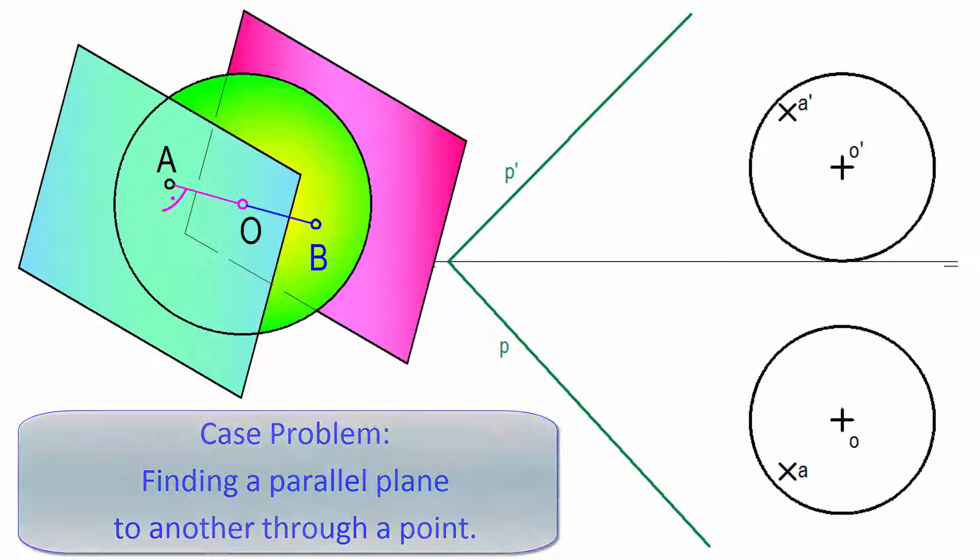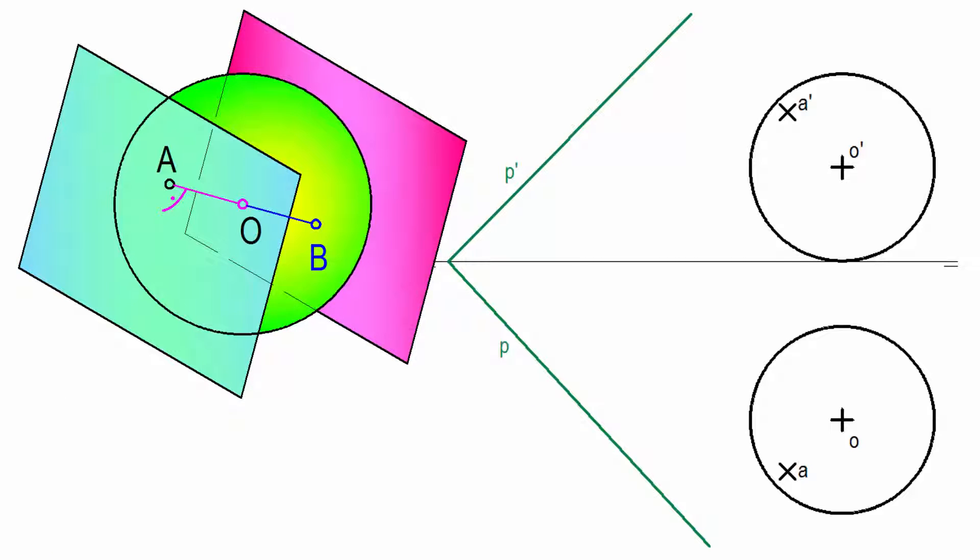The new tangent point we get by a central symmetry. We add the point as the center of the sphere and extend the segment to the other side being the same distance.